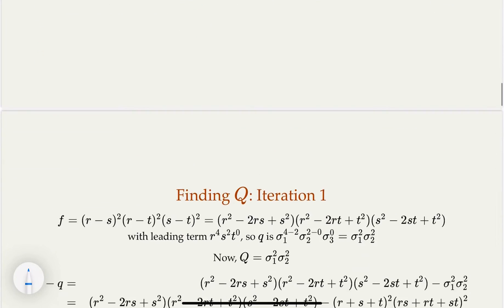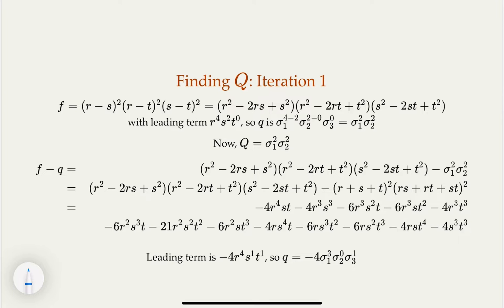In our case, the leading term of the original function, when expanded, is r to the fourth power, s to the second power in lexicographic order. The degrees in Q are going to be 4 minus 2, 2 minus 0, and 0 — giving sigma 1 squared, sigma 2 squared — because n1 is 4, n2 is 2, leading to 2, 2, 0.